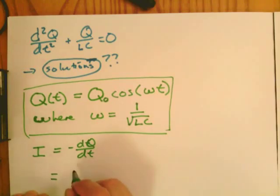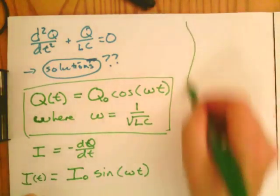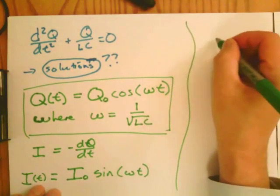Since I is a negative time derivative, then you can define I as the sine function. So the current flow will basically be a sine function that's oscillating.